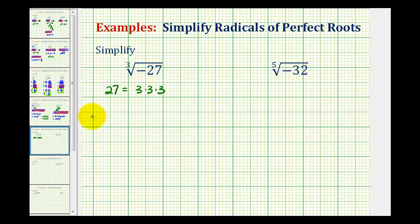So we can rewrite the cube root of negative 27 as negative 3 times negative 3 times negative 3. And because we're taking the cube root of this and we have three equal factors, this will simplify to just one of the factors, which is negative 3.